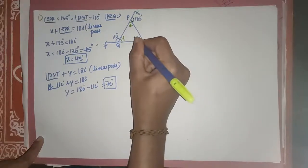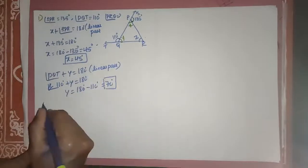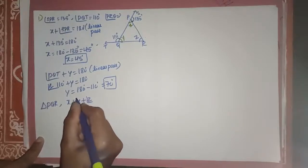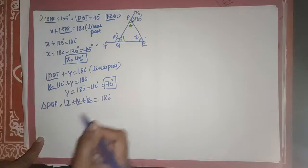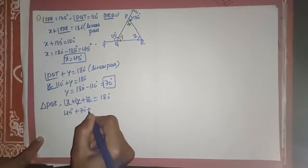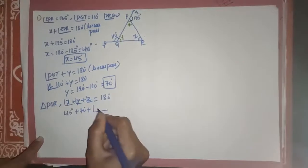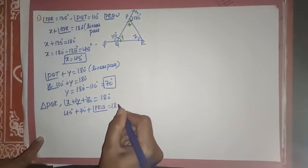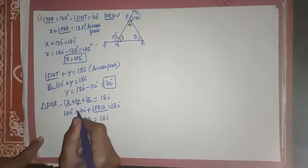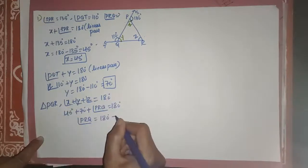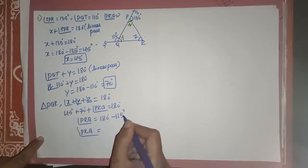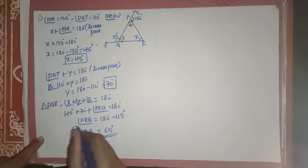Now we can find angle Z, which is PRQ. In triangle PQR, angle X plus angle Y plus angle Z equals 180 degrees — the sum of interior angles. X is 45 degrees, Y is 70 degrees, so Z equals 180 minus 115, which gives PRQ equals 65 degrees.